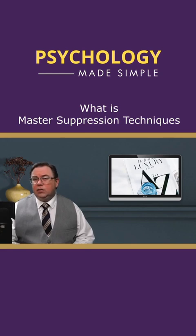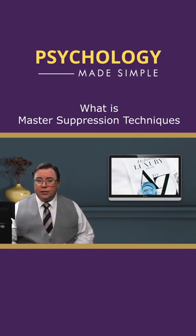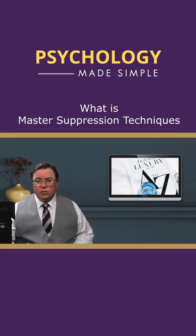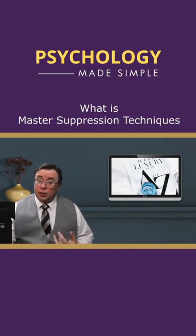These techniques can be used either consciously or unconsciously, and they're used to maintain unequal power structures in a workplace, in other social settings, in school, and so on. Now, the five most common master suppression techniques — the first one being making opponents invisible.